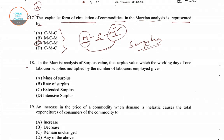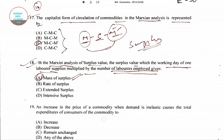Question number 18: In the Marxian analysis of surplus value, the surplus value is the working day of one laborer multiplied by the number of laborers employed. The right option is 'mass of surplus', which is option A. So in the Marxian analysis, working days of one laborer multiplied by the number of laborers employed gives the mass of surplus.